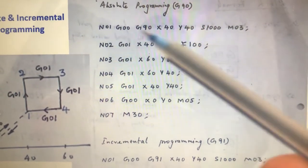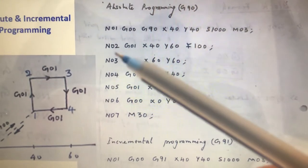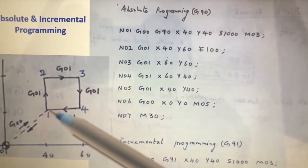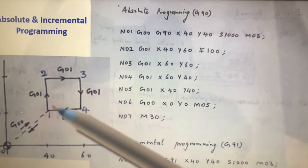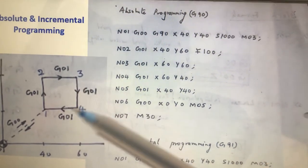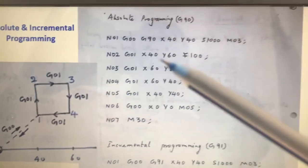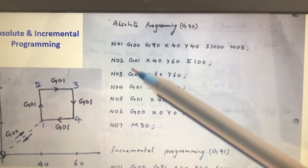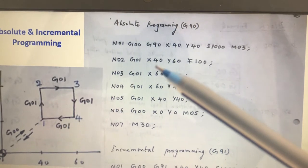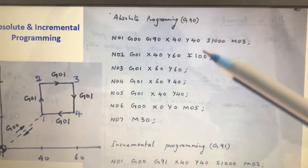You can write M03 before and then S1000 afterwards also, no issues. After one block is completed, there is a semicolon, that is end of block. Then comes to next point, next block, that is N02. We are telling tool to move to point number two by removing material. So the cutting process starts here. Since it is removing materials, we will use the code G01.